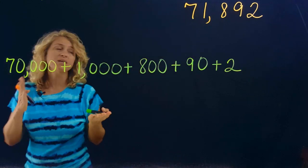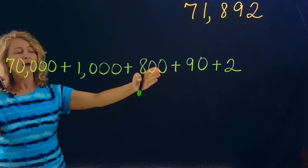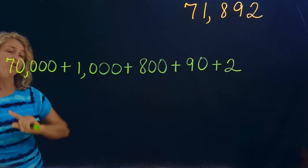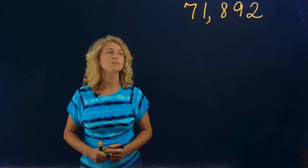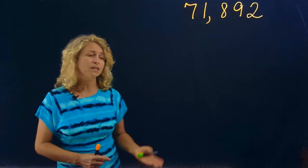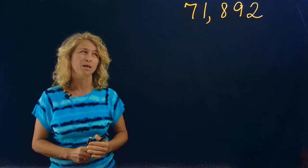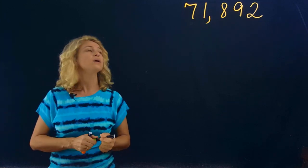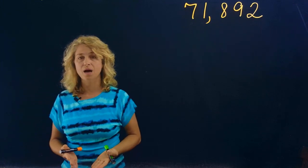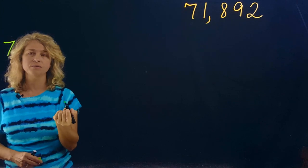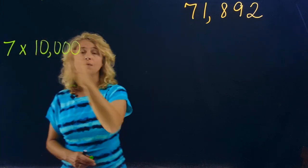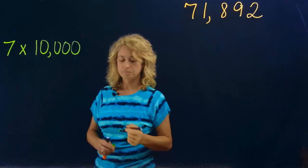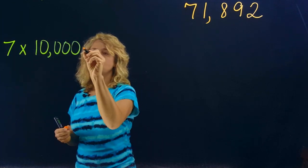Two in the ones place is two. Now it's very likely that you already know how to write expanded form this way, but in fourth grade we have a new way to learn. The seven is in the ten thousands place, so you write seven times ten thousand, which gives you seventy thousand — because the value of the seven is seventy thousand.